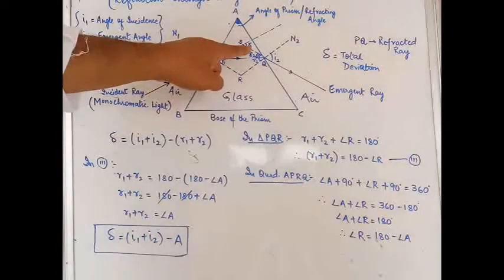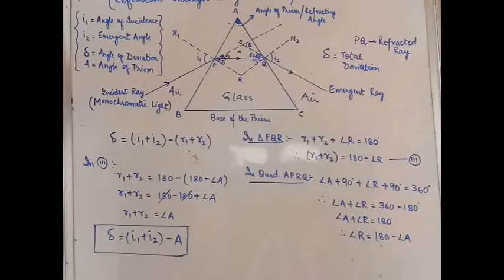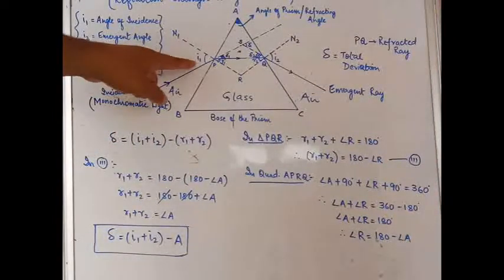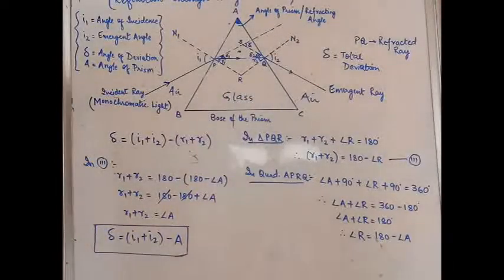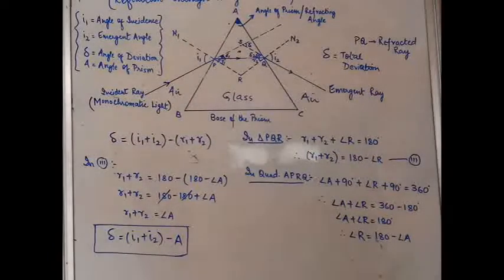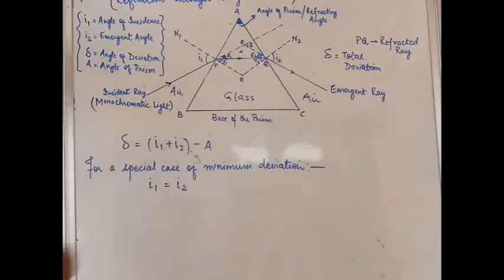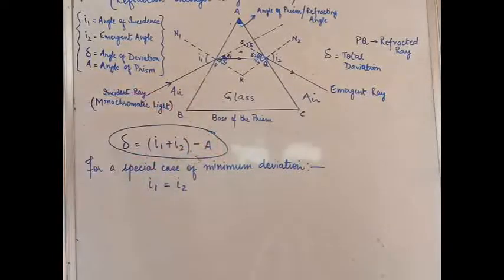Now replacing R1 + R2 with A in our equation, we get: delta = I1 + I2 - A. This equation, which originally did not have the angle of prism, now contains the angle of prism. So the total deviation angle depends upon the angle of prism A. If you choose prisms with different angles A, you will obviously have different angles of deviation. Here I1 is the angle of incidence and I2 is the emergent angle, the angle the emergent ray makes with the normal.